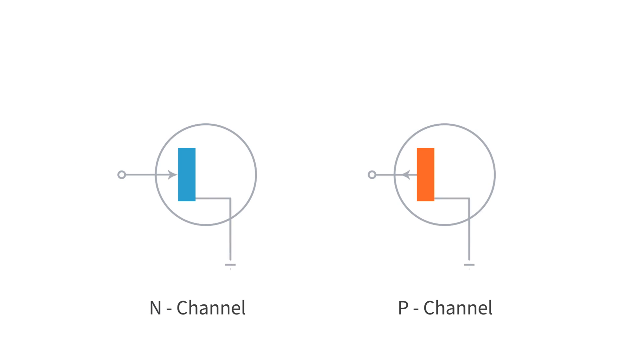While the source is always kept at ground, the drain is kept at a positive potential for an N channel JFET and kept at a negative potential for a p channel JFET.